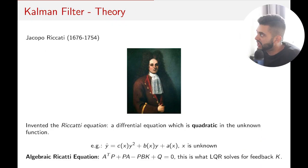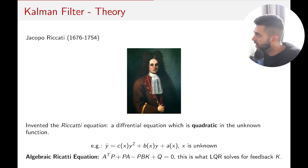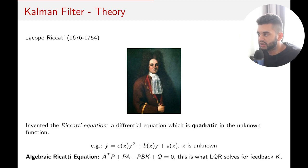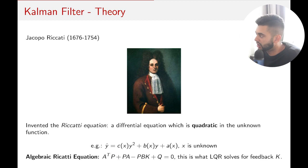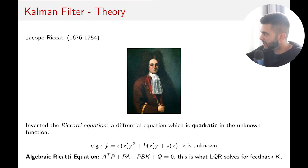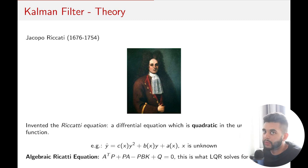I'd like to introduce you to Mr. Riccati, who lived from 1676 to 1754. He invented the Riccati equation, which is a differential equation that is quadratic in the unknown function. In control system design we use the matrix form. The Algebraic Riccati Equation, or ARE, is: A-transpose times P plus P times A minus PBK plus Q equals zero, where K is a feedback gain and P is a positive definite matrix. We also have the discrete-time Riccati equation, which is heavily used in industry.